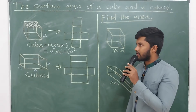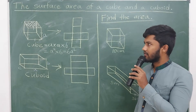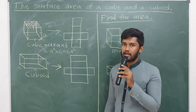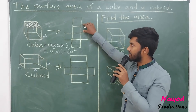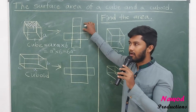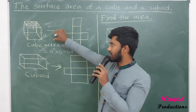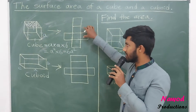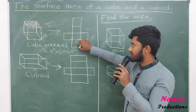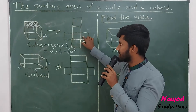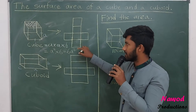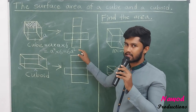Likewise, we can calculate the surface area of a cube. The net of a cube — that is, the unfolded figure — shows all six faces, and we can identify the edges and vertices using the net as well.